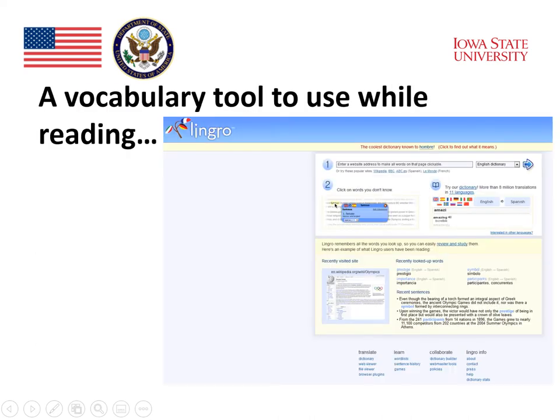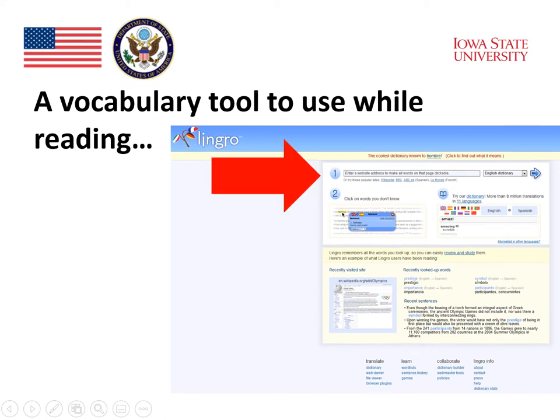Here's an example of one vocabulary tool that students can use while they're reading. It's called Lingro, and it allows students to attach the text they are reading to the Lingro program. The Lingro program becomes a dictionary for every word in the text. The arrow shows where the student can type in a website and the Lingro program will attach to that text to provide definitions for the words.